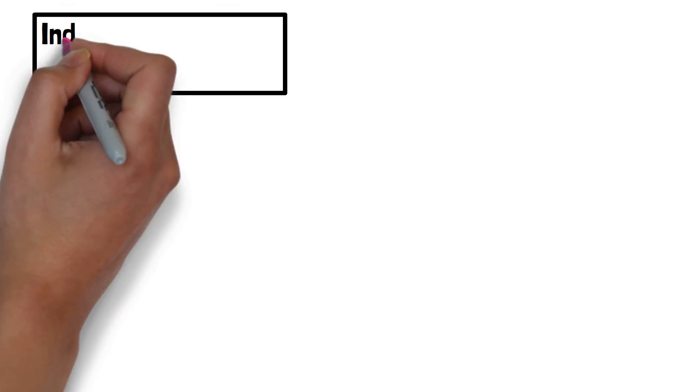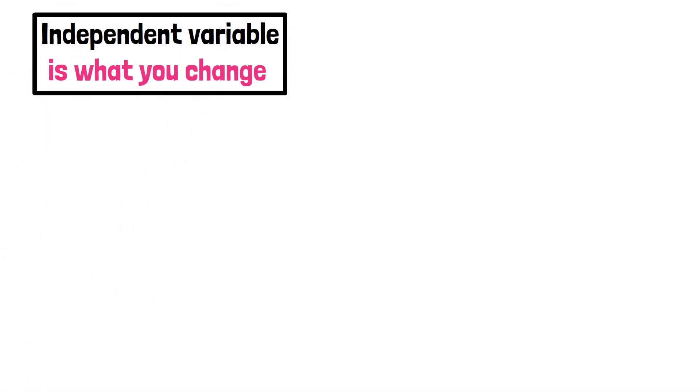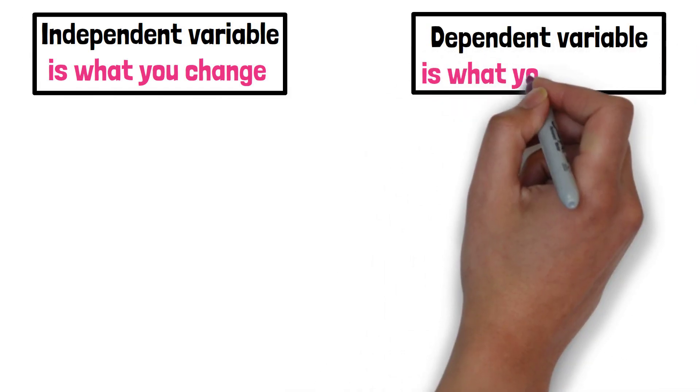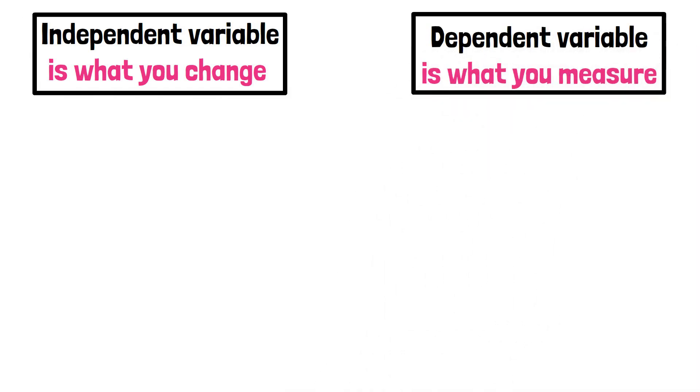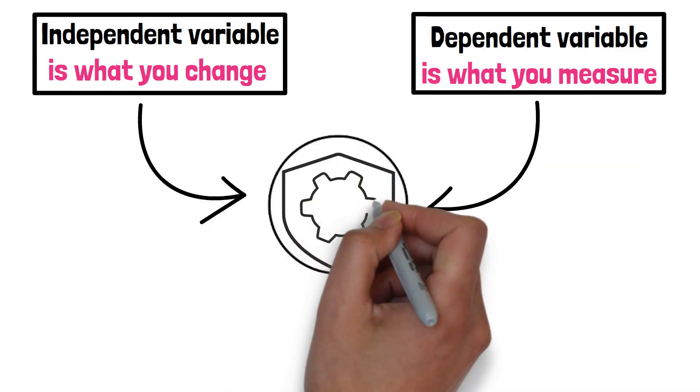So to summarize, the independent variable is what you change, while the dependent variable is what you measure. By defining these variables clearly, you can understand relationships and draw accurate conclusions.